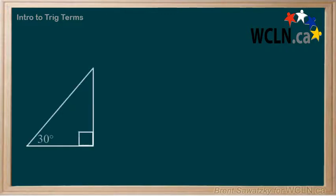As we start with trigonometry, or trig, let's sort out some of the terminology. Here's a right triangle. We'll double check — 90 degrees in this corner here. Yes, we know it's definitely a right triangle.